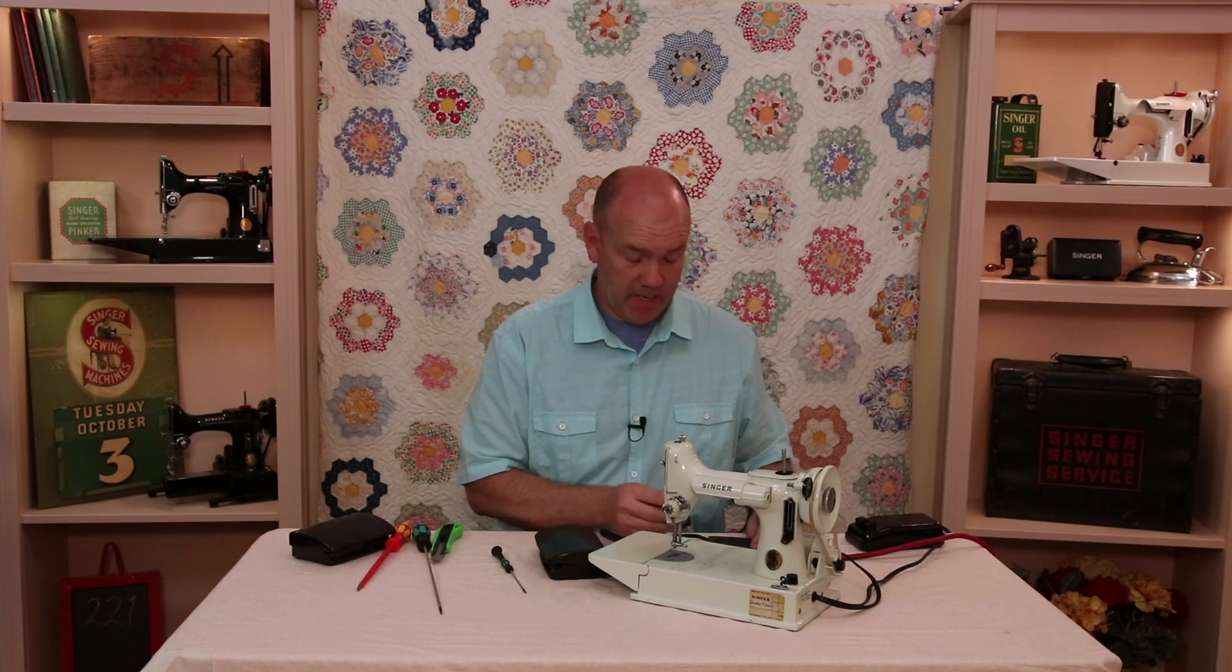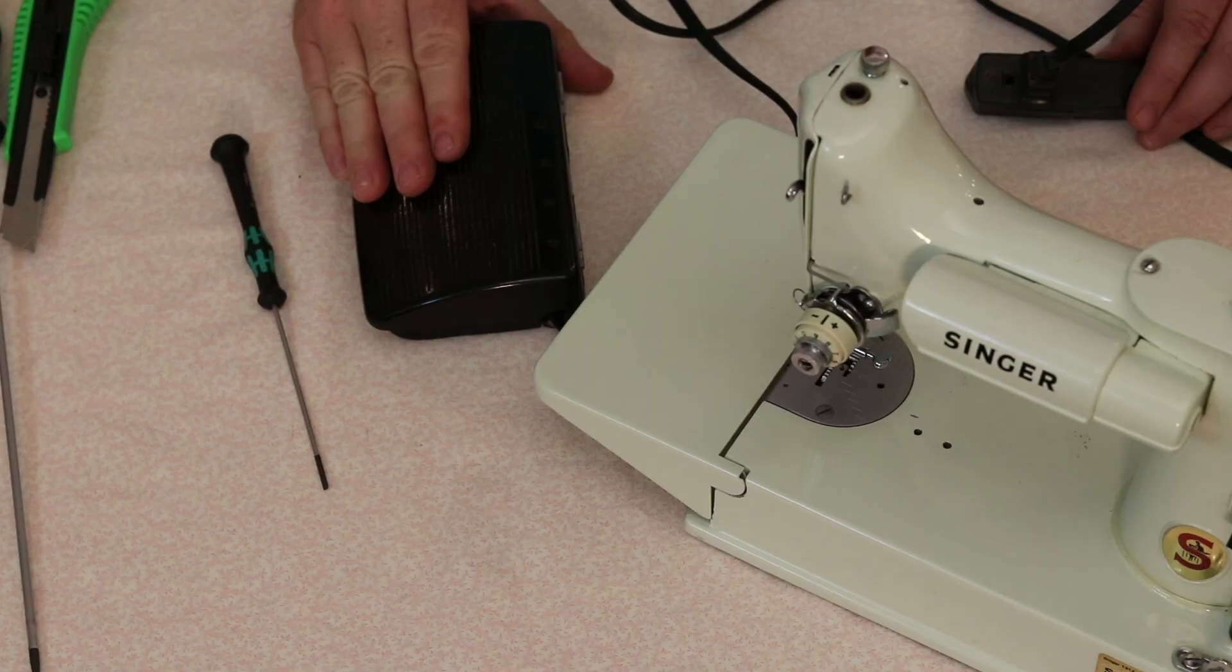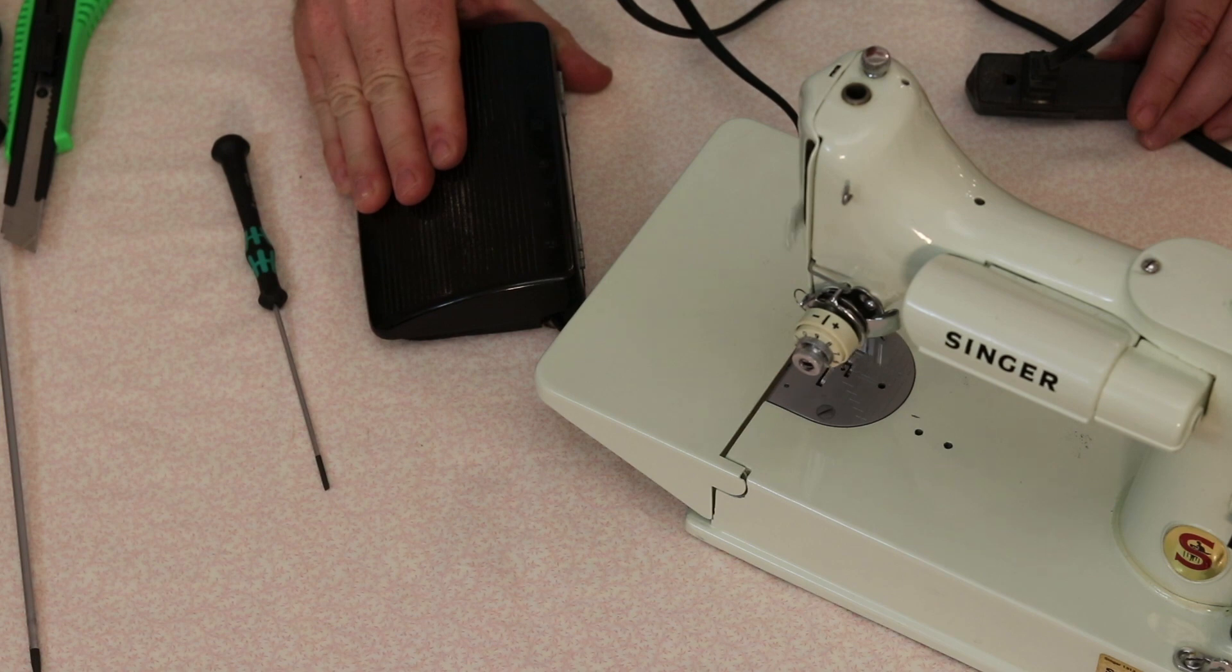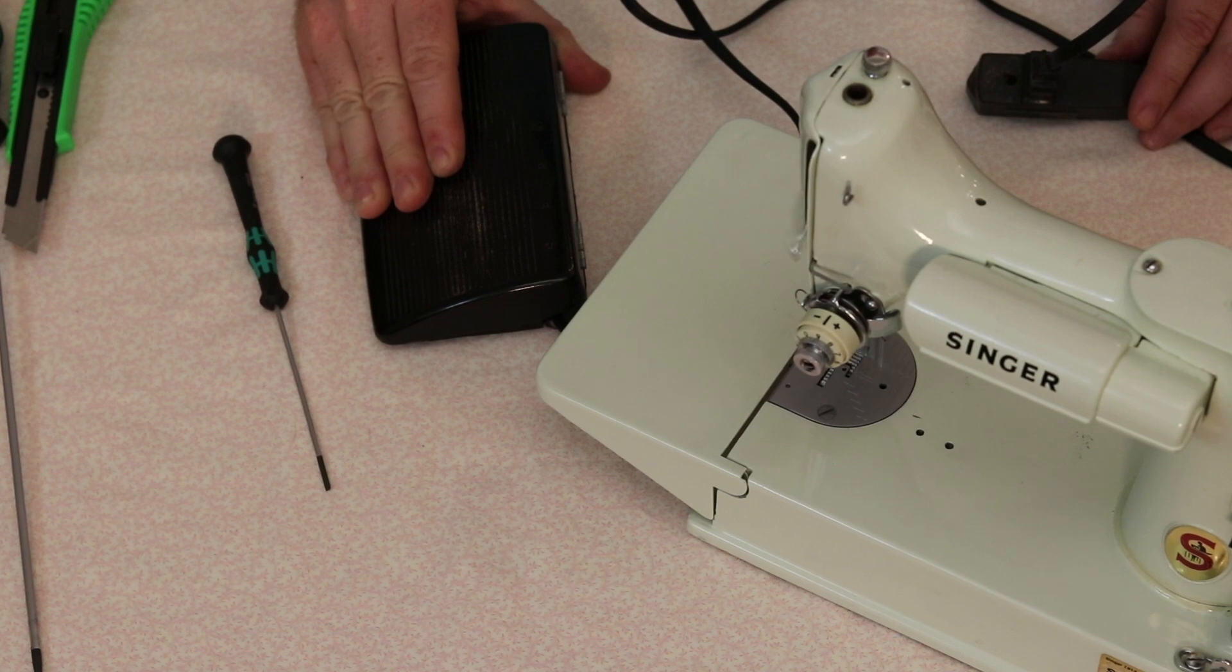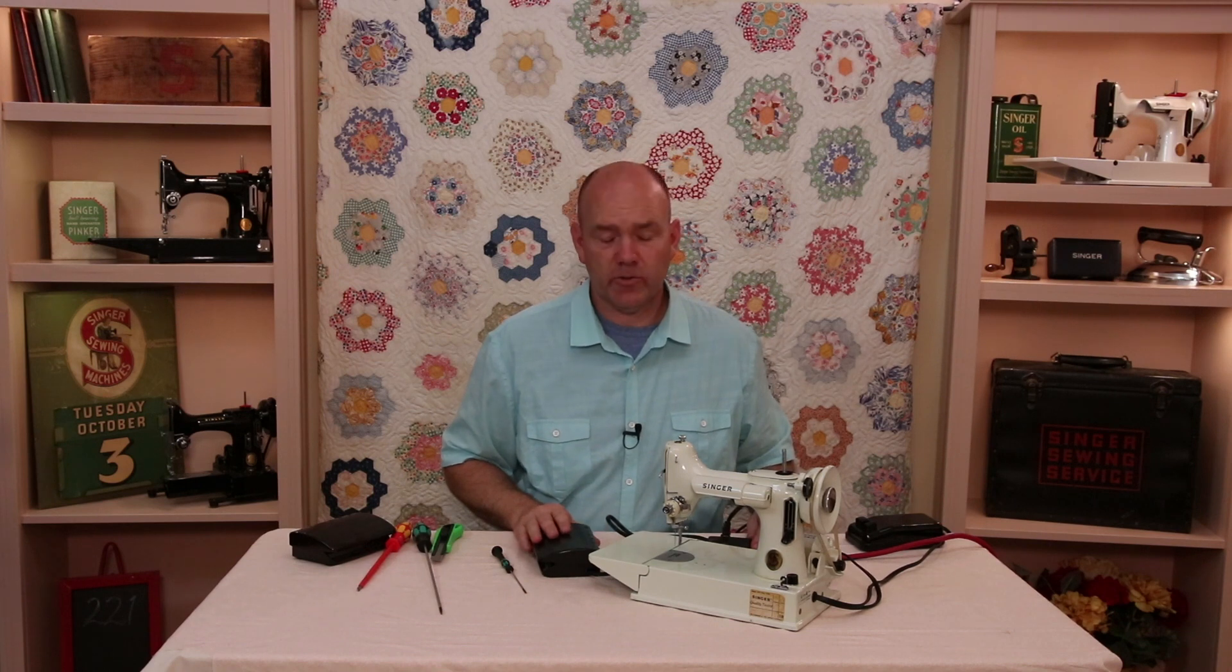Okay now we're going to plug the machine back in and we're going to see if our adjustment has worked. And it has. I can now sew slowly with a full range of speed all the way to top speed. So that's how you would adjust that controller.